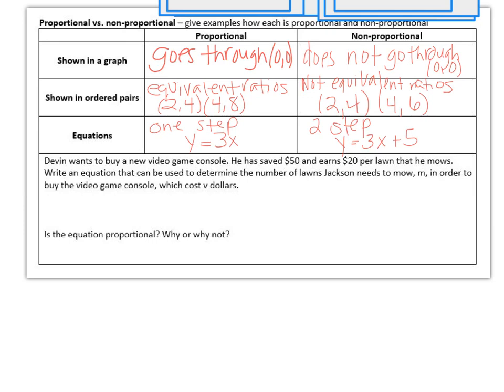And then the second one, Devin wants to buy a new video game console. He has saved $50 and earns $20 per lawn that he mows. Write an equation that can be used to determine the number of lawns Devin needs to mow in order to buy the video game console, which costs V dollars. And so he has saved $50, so plus he earns $20 per lawn that he mows, and they're calling that M. If he did that, how many lawns would it take to save that much money? And again, they don't want you to solve it. They just want you to write the equation. And then it says, is the equation proportional? Why or why not? And this would be no, because it is 2 step.